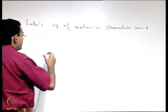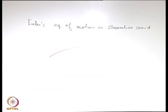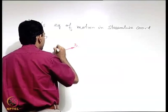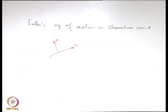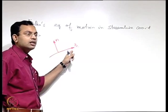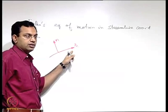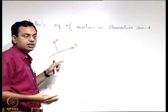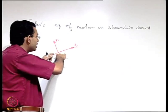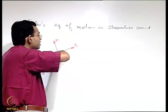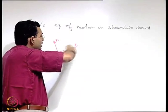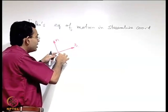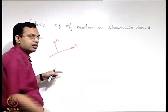We consider a streamline and a coordinate system S-N, where S is the streamwise coordinate. It is not exactly the tangential coordinate but is oriented along the streamline — effectively like a tangential coordinate aligned with the curve. N is the normal coordinate, perpendicular to S.